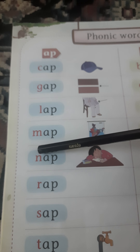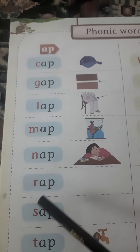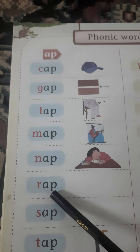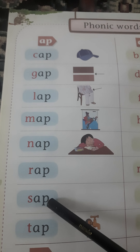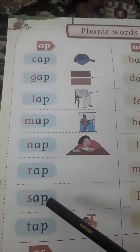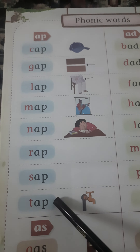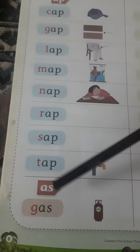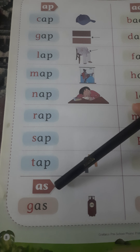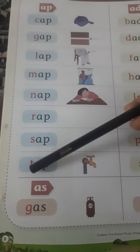Map, nap, rap, sap, tap. Now this is A and this is S — as.